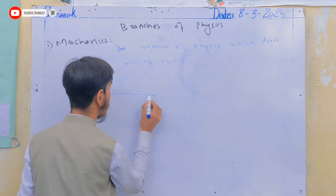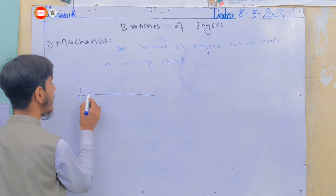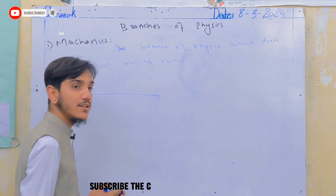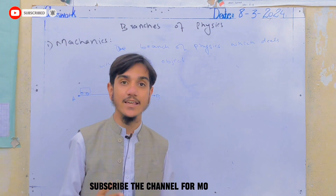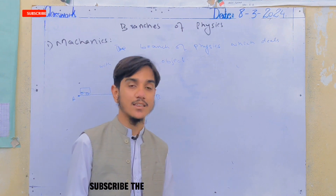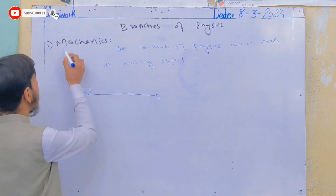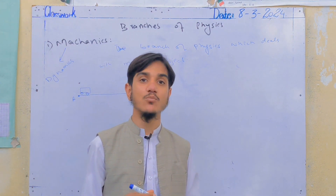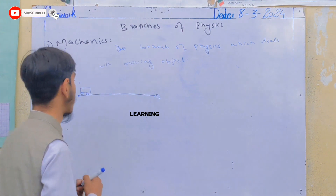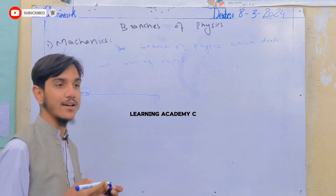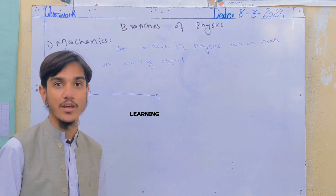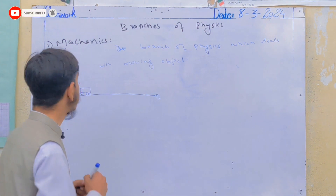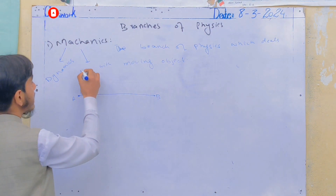For example, this is point A and this is point B. If an object moves from point A to point B, there are forces involved. The study of motion with forces is called dynamics. The motion itself — including velocity, distance, displacement, and acceleration — is studied under kinematics, which is another branch of mechanics.